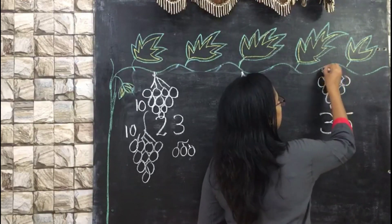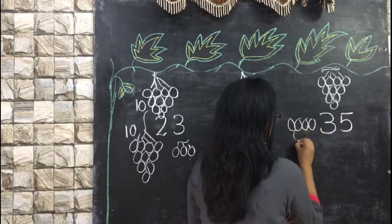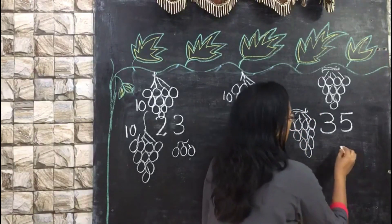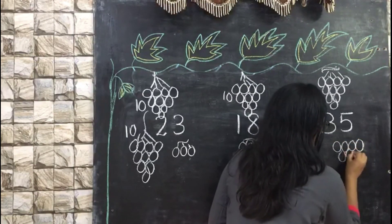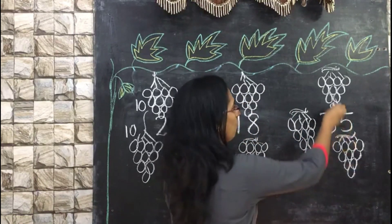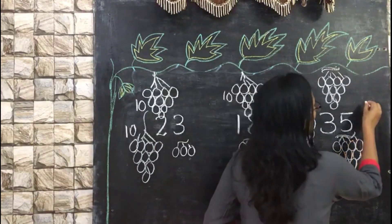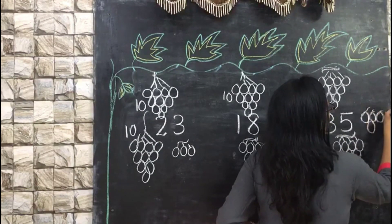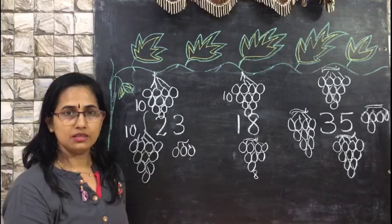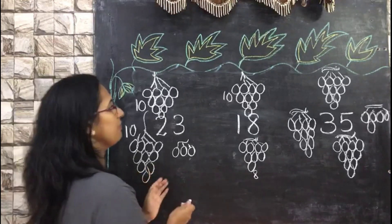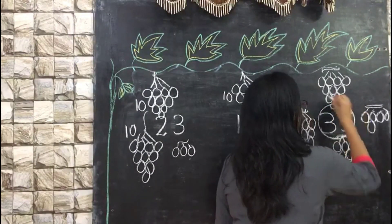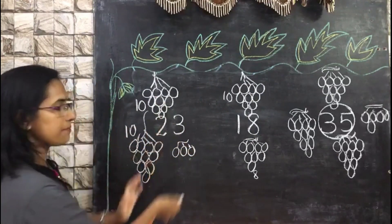Drawing the third bunch for 35, and then adding 5 individual grapes — 1, 2, 3, 4, and 5. So we have 3 bunches plus 5. Now I ask: which number has the most bunches of grapes? It is very easy — they find that number 35 has the most grapes, so that is the big number, and the number with the fewest grapes is the smaller number.